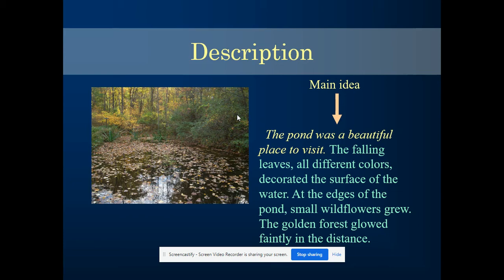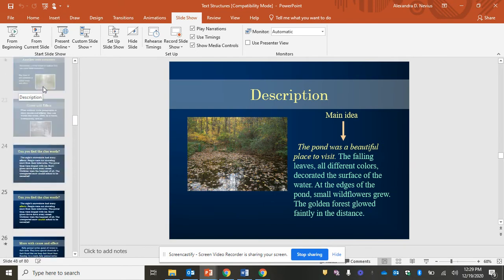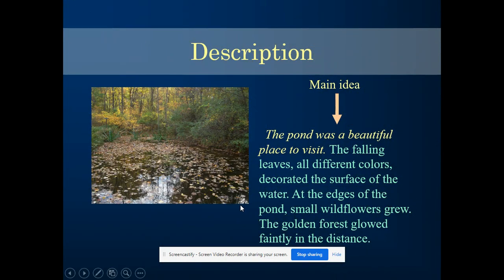You'll also notice in this text you don't have any of the clue words that were used in the other text structures. For chronological order, we don't have any first, next, last. For compare and contrast, we don't have both, while, or difference. In this description, we're not using those words either. We also skip problem and solution. And the other text structure we've been working on was cause and effect — we don't have words like cause, because, effect, as a result, and so.